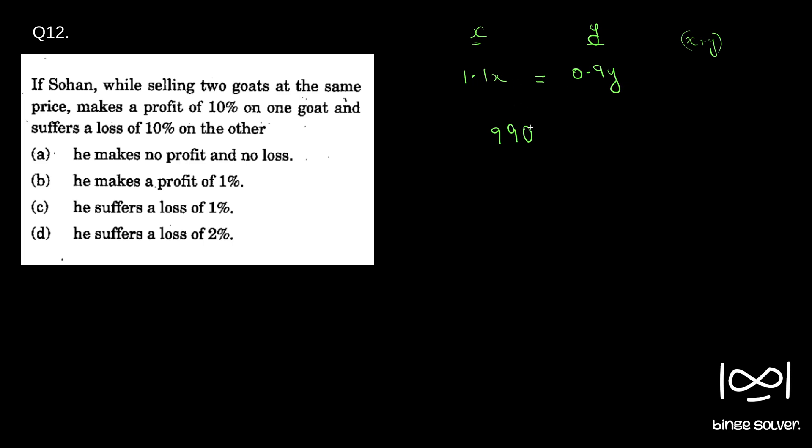So how did I choose 990? 11 into 9 which is 99, so 990. To get a whole number, I just randomly chose he sold his both goats at 990 rupees. So we know that 990 is 1.1x and 990 is 0.9y.